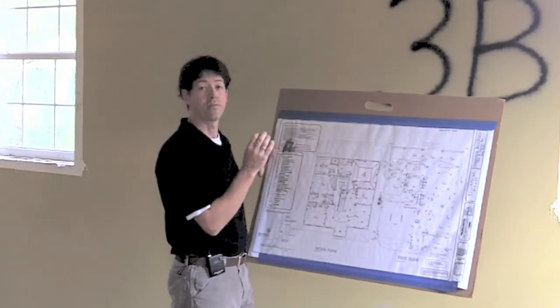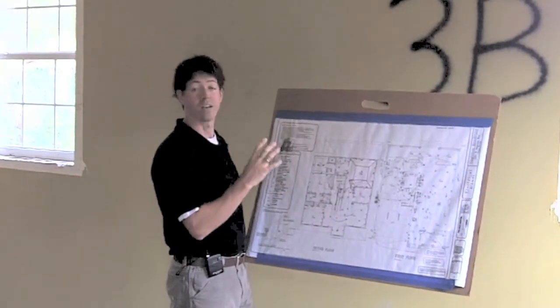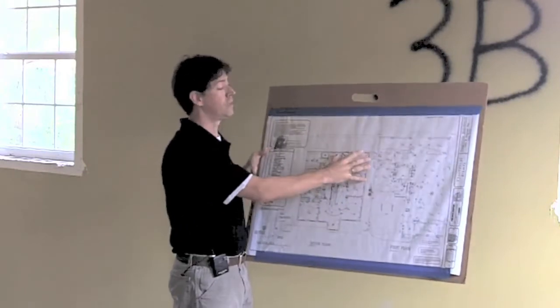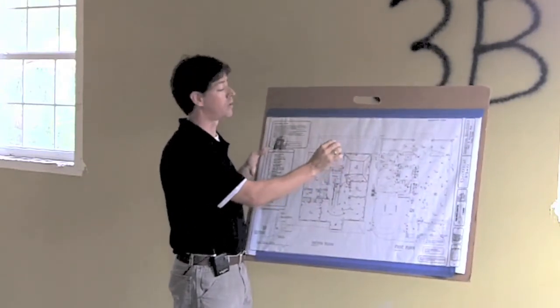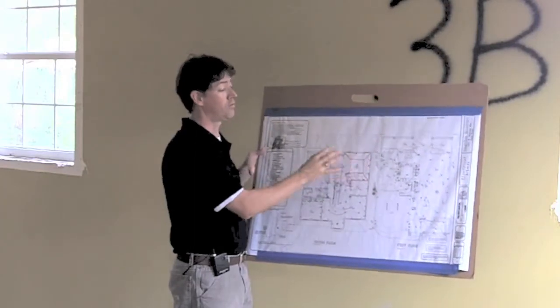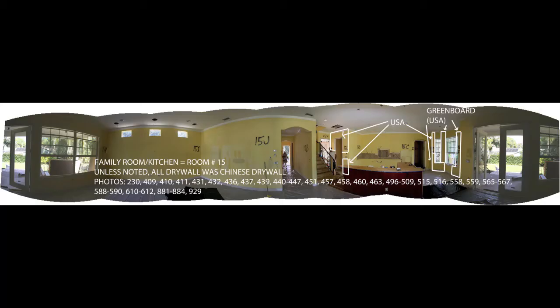Then, per the order, you have fulfilled the requirement. You've taken a photograph of every board, you've indicated it on a floor plan, and you've indicated which picture number it was on the floor plan. You've then achieved the photographic evidence requirement per Judge Fallon's order.